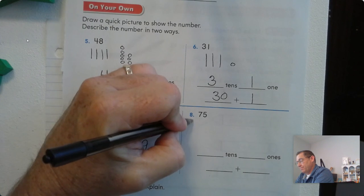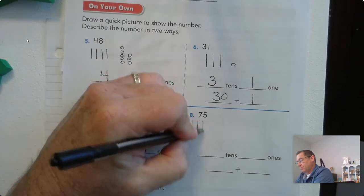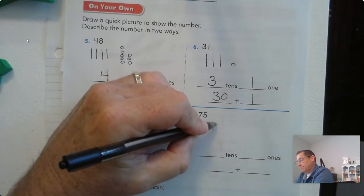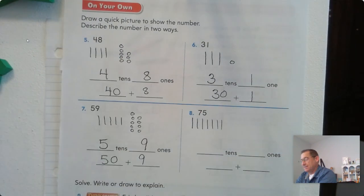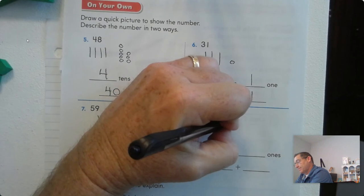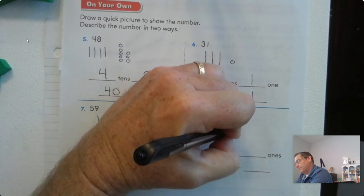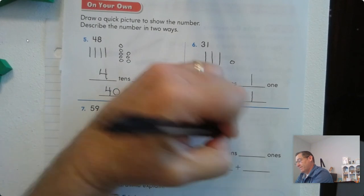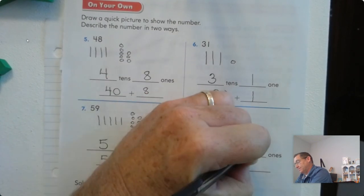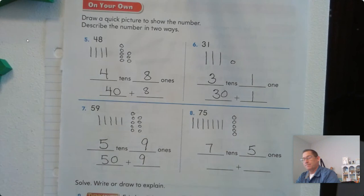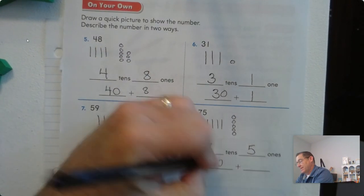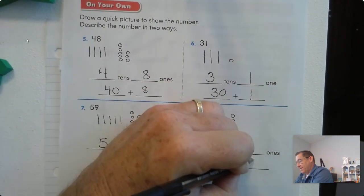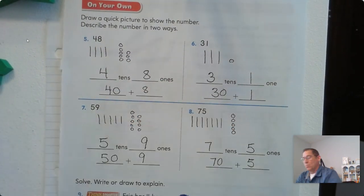75: seven tens and five ones. Seven tens is 70 and five more.